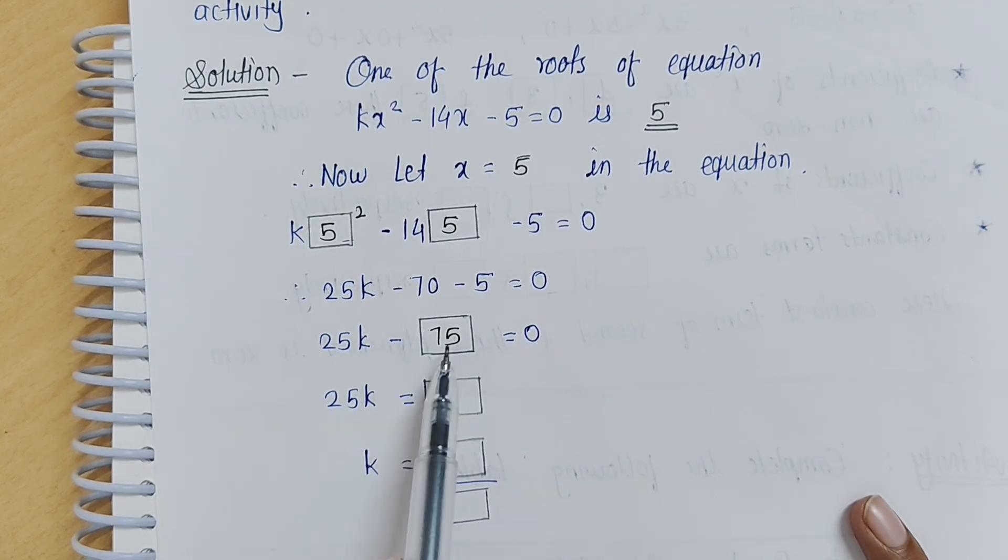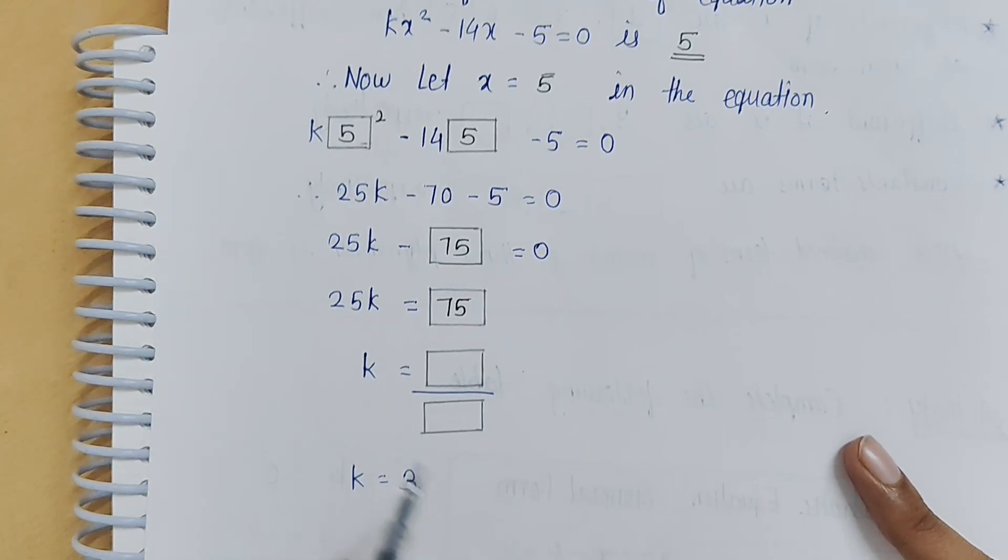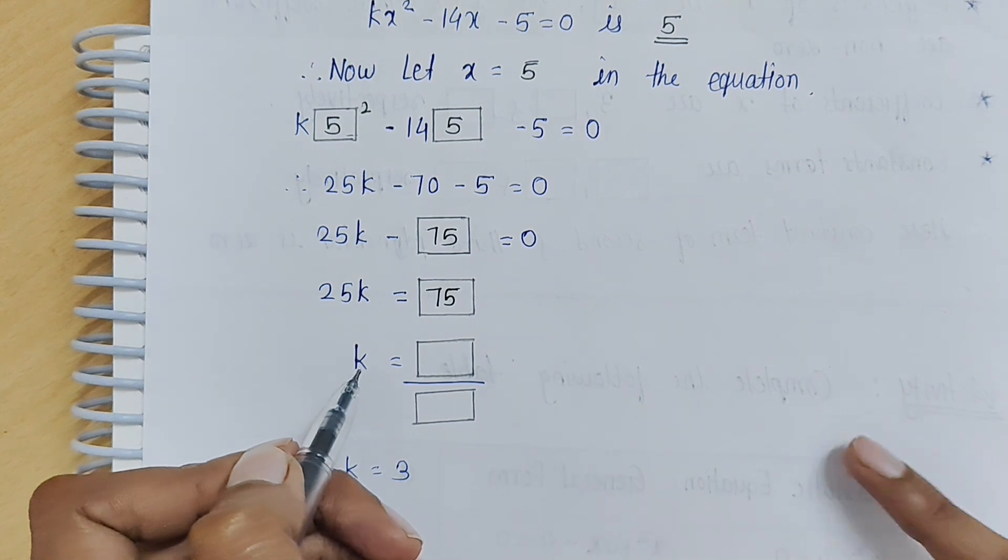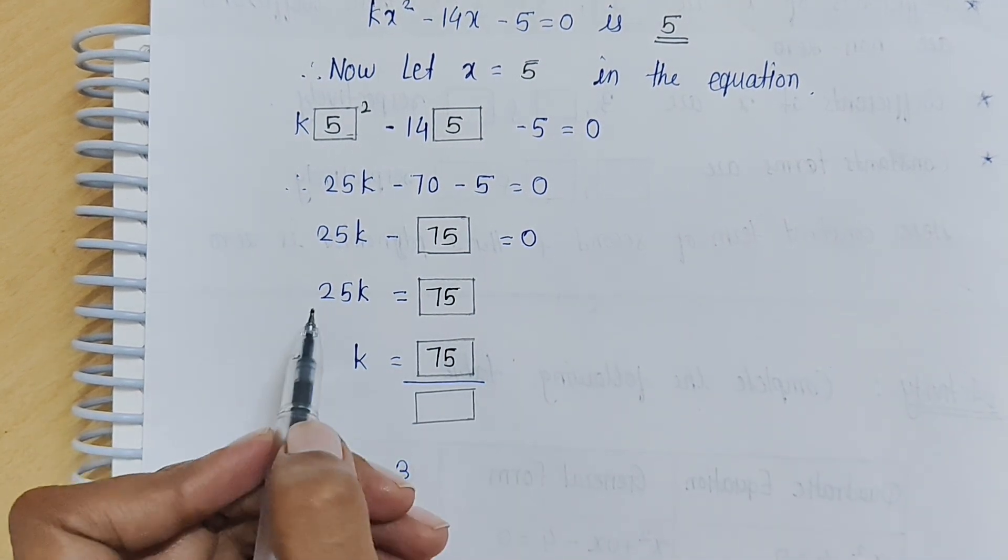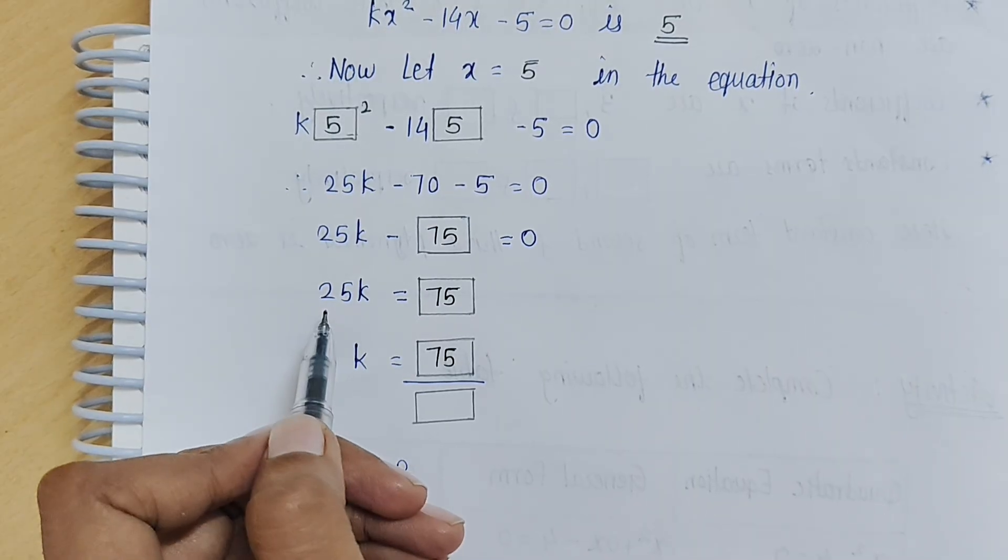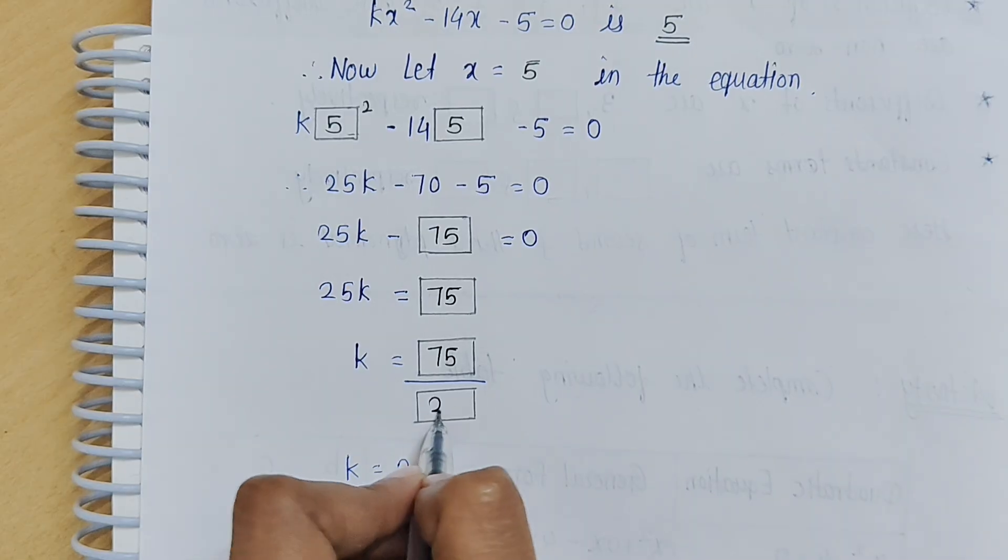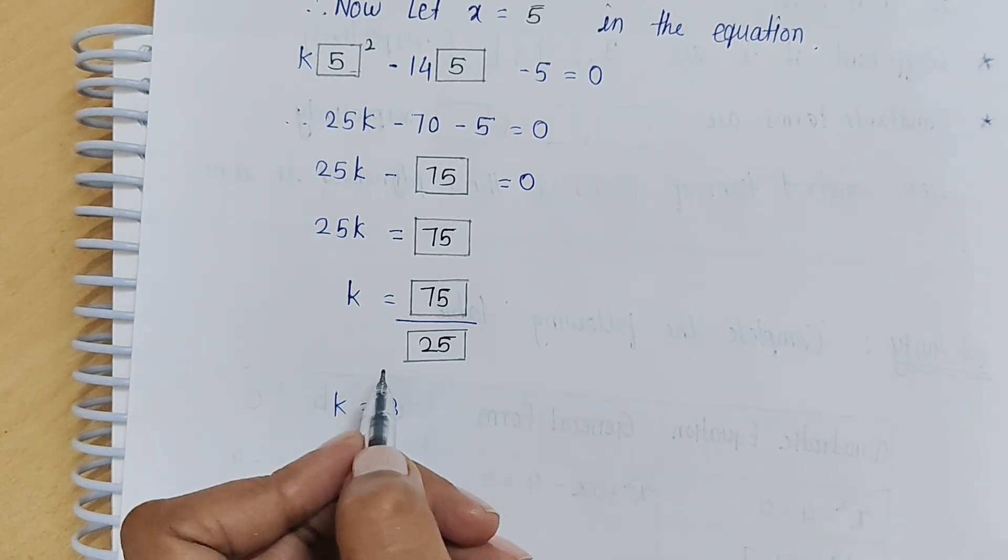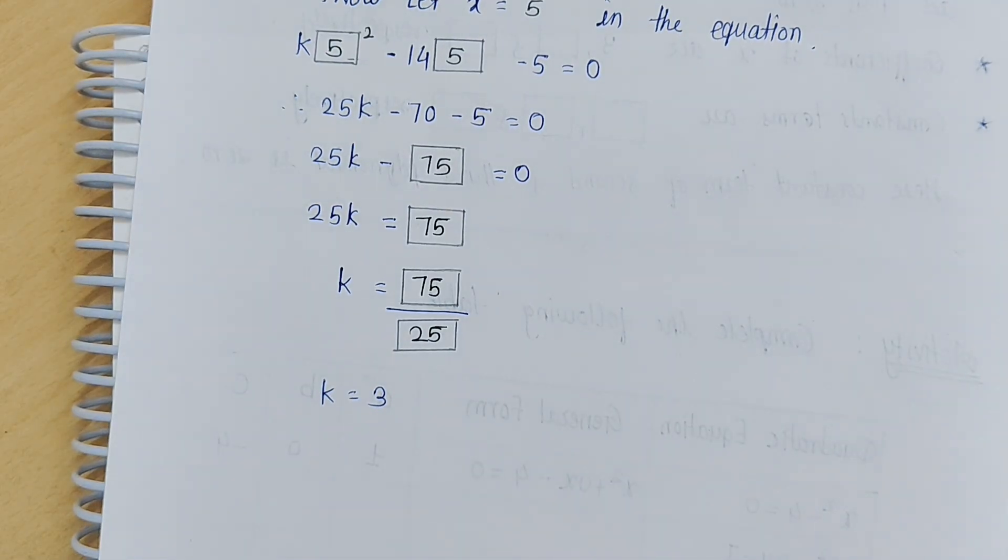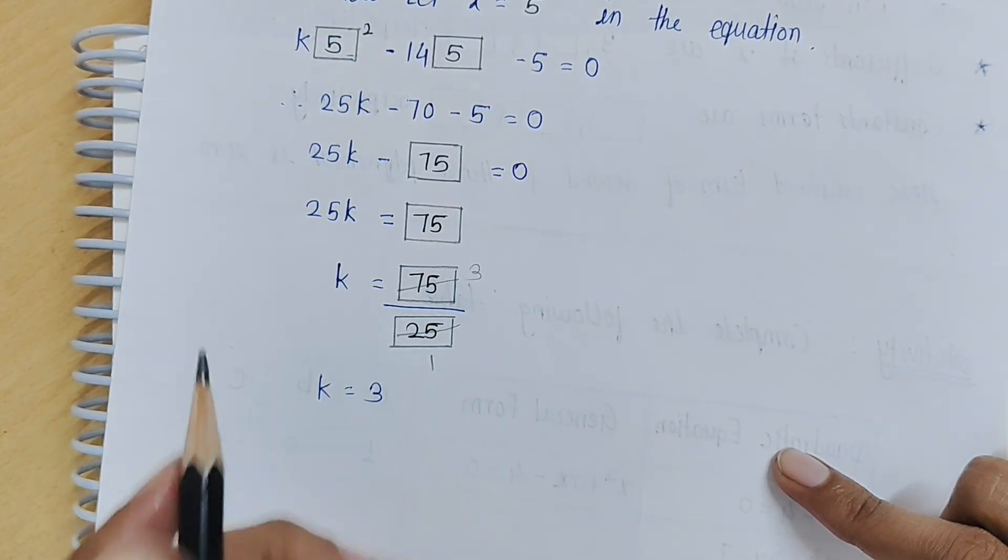We have to calculate k's value. 75 is as it is, but 25 is multiplied here, so if we have shifted this then it will divide. So here it will be 25. Now we have 75 divided by 25, therefore we have got k equals 3, and it was given in our activity, so the activity is complete.